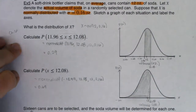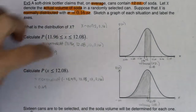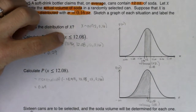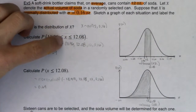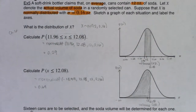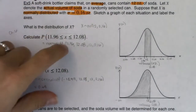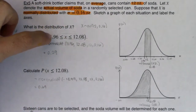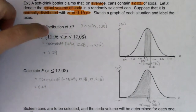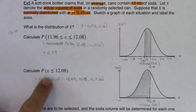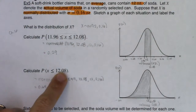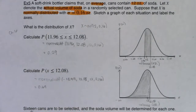I'm still going to use normal CDF with low, high, mean, standard deviation. My low is negative infinity, so I'll type negative 1e99, high 12.08, mean 12, standard deviation 0.16. That gives us about 69%. That's reasonable — I knew it was going to be larger than 50, so my number is matching my graph. Those are chapter six problems: we're on the population distribution, looking at one can of soda, one x value, not an average.